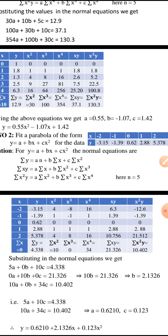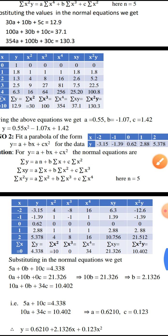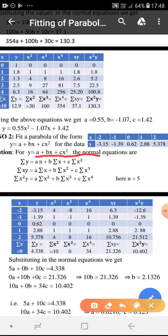To find A, B, C, we form three normal equations. The first normal equation, by attaching sigma to each term of both sides, gives summation y equal to A into n plus B into summation x plus C into summation x square. The second normal equation, attaching summation x, gives summation xy equal to A into summation x plus B into summation x square plus C into summation x cube. The third normal equation, attaching summation x square, gives summation x square y equal to A into summation x square plus B into summation x cube plus C into summation x power 4.